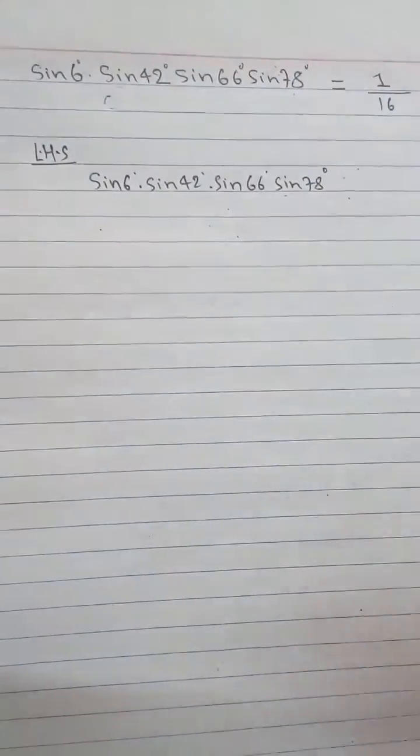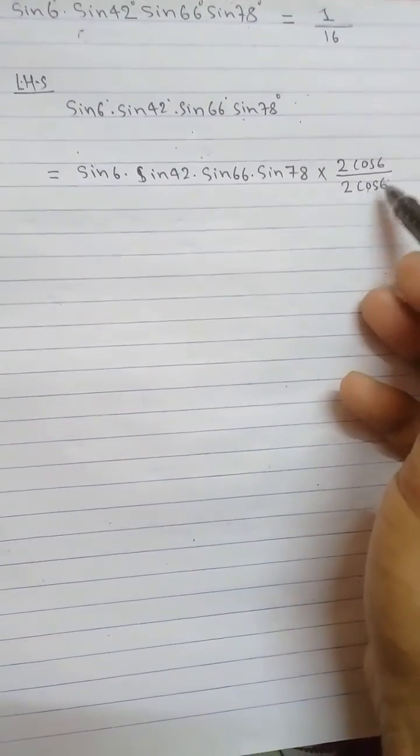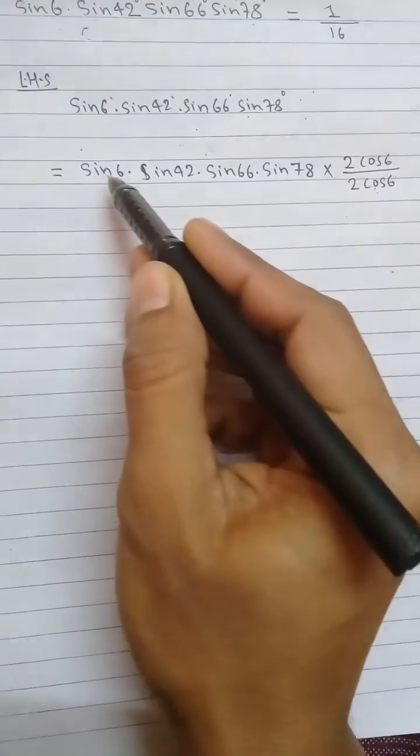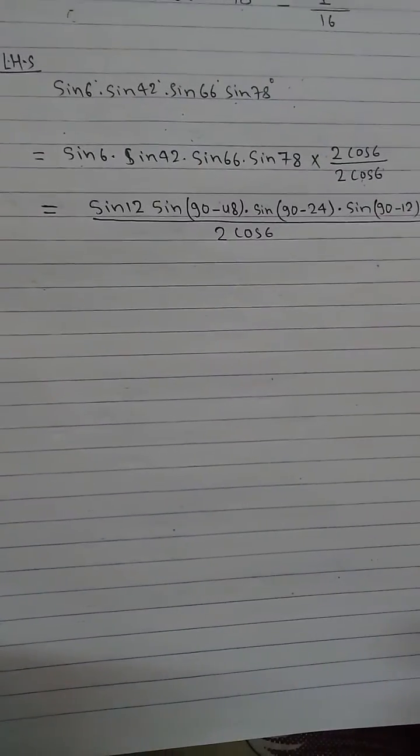To prove this, take LHS. After this, multiply by 2cos6 by 2cos6 so that we can apply the formula for sin6 and 2cos6. Then if we apply the formula for 2sina into cosa, we will get sin2a.